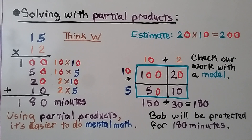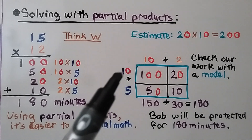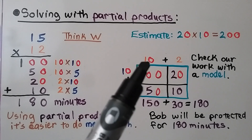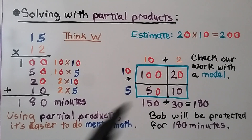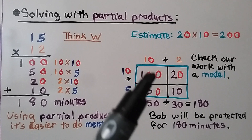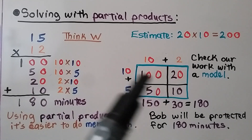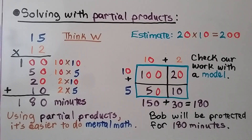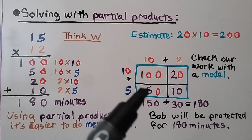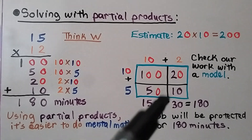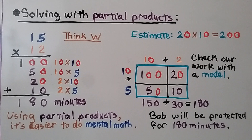It's easier to use partial products for some people because it's easier to do mental math. We can check our work with a model: break 15 into 10 plus 5 and 12 into 10 plus 2, draw the rectangle, and verify we multiplied all four parts. Adding 100 plus 50 gives 150, and 20 plus 10 gives 30, for a total of 180. So Bob will be protected from sunburn for 180 minutes.